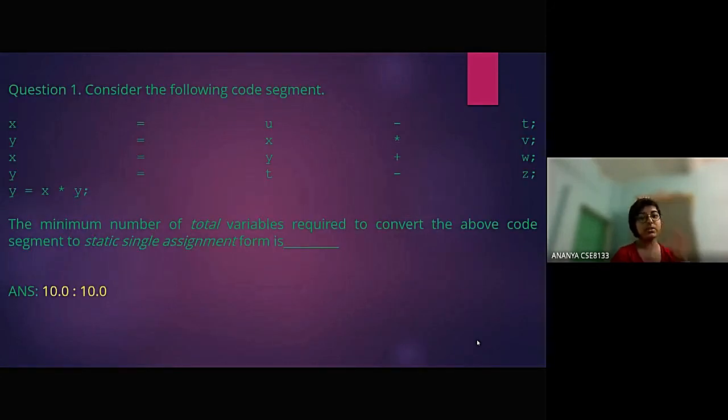Gate question number 1. Consider the following code segment: x equal to u minus t, y equal to x into v, x equal to y plus w, y equal to t minus z, y equal to x into y. The minimum number of total variables required to convert the above code segment to static single assignment form is dash. Answer is 10.